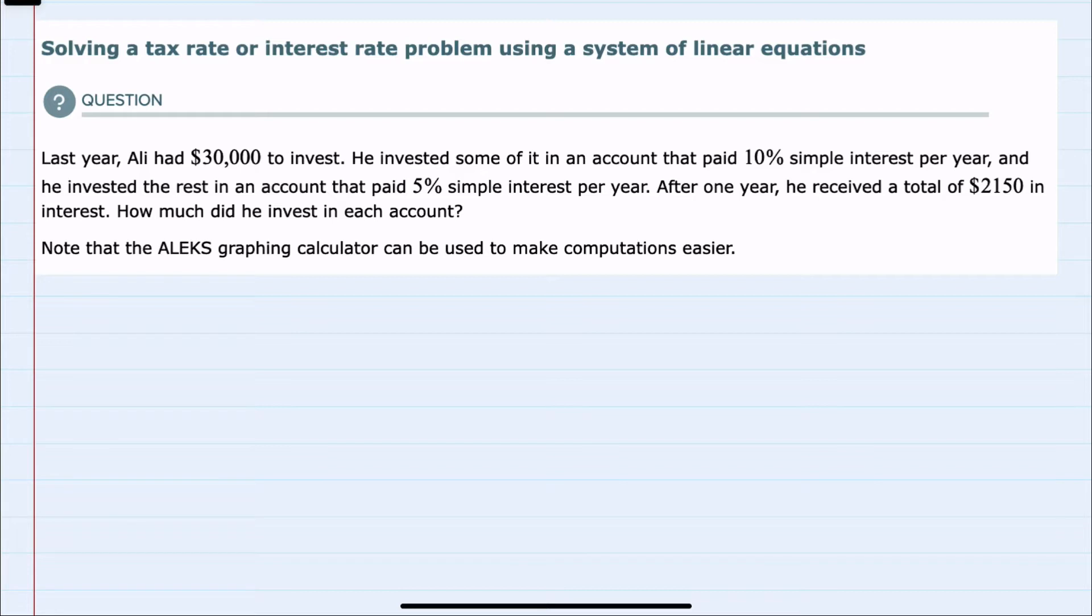We're told that last year, Ali had $30,000 to invest. He invested some of it in an account that paid 10% simple interest and the rest in a second account that paid 5% simple interest. And that his total income was $2,150 in interest. And we're asked how much he invested in each account.